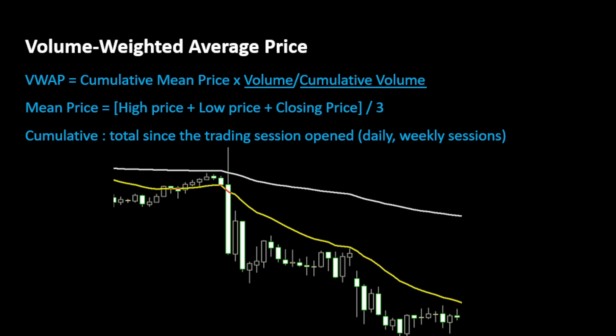To calculate the VWAP we can use the following expression: it's equal to the cumulative mean price times the volume divided by the cumulative volume, where the mean price is the average price between the high, low, and closing price — so we're simply summing these three values and dividing by three. By 'cumulative' we mean the total sum since the trading session opened, which can be reset daily, weekly, or monthly depending on the time frame.